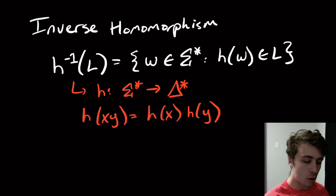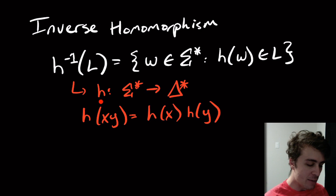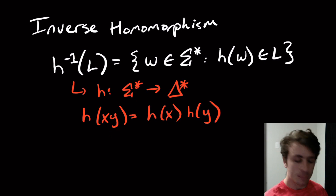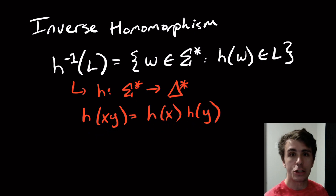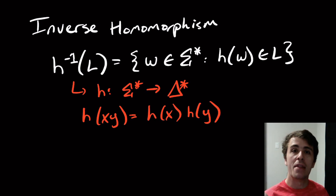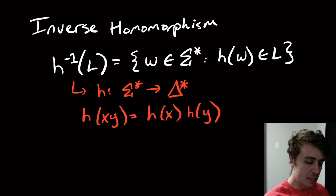Before, we were talking about homomorphisms: looking at h(w) for all strings w in L — we take all the strings in L then apply h to them. Here we're looking at all the possible strings such that applying h to them lands in L. A homomorphism is a function that takes strings to strings from some alphabet to a different alphabet, with the peculiar property that if you have a string with two parts x and y, you can split h into two parts, compute it on each individual part, then combine them together.